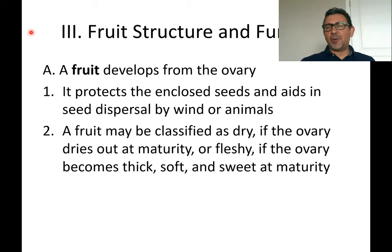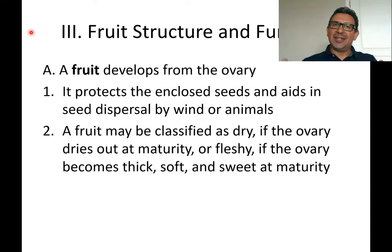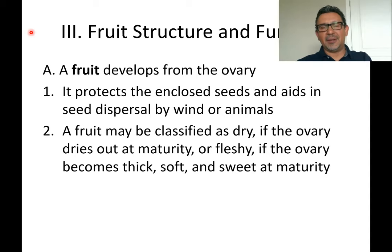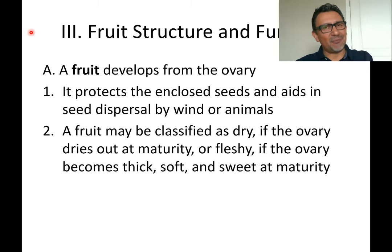At this point you may be asking: what exactly is a fruit from a botanical, scientific point of view? A fruit is a structure that develops from a flower and contains seeds. This will make you think about things we traditionally call vegetables — for example, a bell pepper develops from a flower and has seeds inside, so botanically it is a fruit.